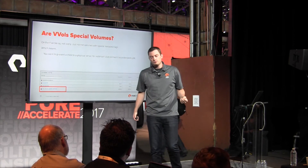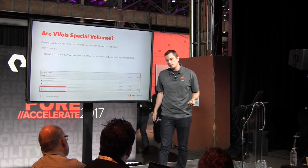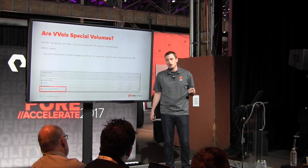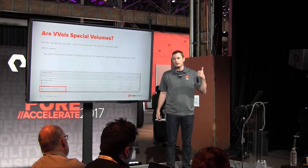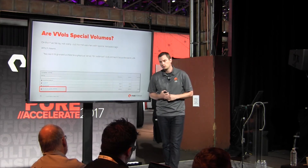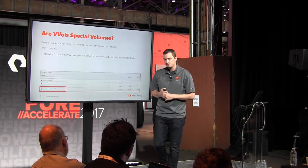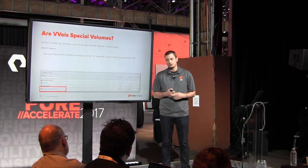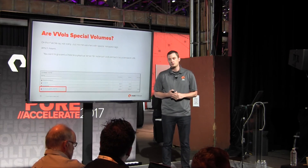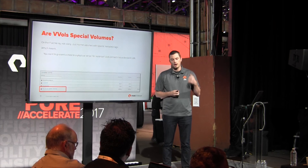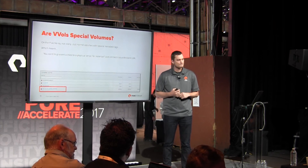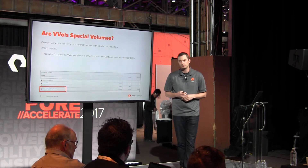The Flash Array currently supports 5,000 volumes and 50,000 snapshots. We are aggressively looking at upping that number as well — 5,000 VVols and 50,000 snapshots. That number will be going up in the near future, supporting about 1,000 VMs.